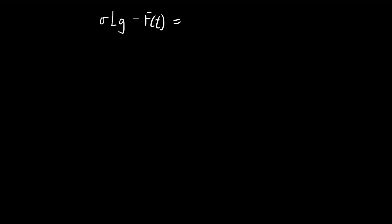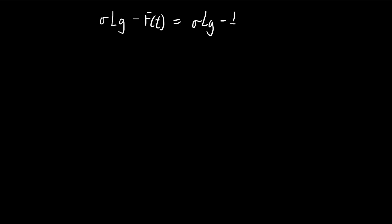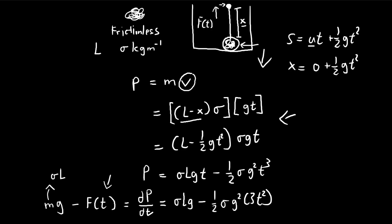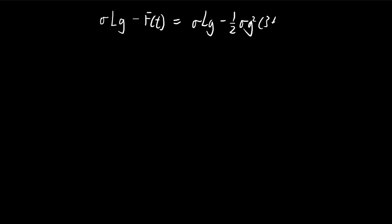Let me open a new page. So the downward force of gravity minus the force from our hand is equal to our change of momentum. We have negative 1.5 sigma g squared 3t squared. Obviously these cancel out, and these negative signs turn to positive. And there we have it. A force as a function of time is equal to 3 over 2 sigma g squared t squared. This is the function that we're looking for.